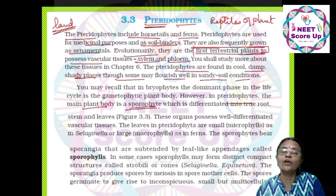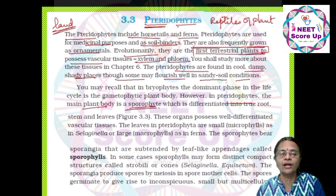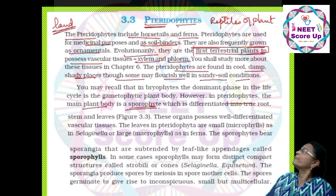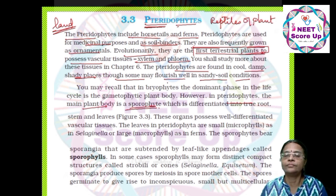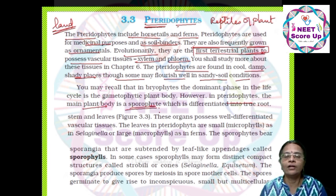In bryophytes, the sporophyte lacks photosynthetic pigment and is dependent on the gametophyte. But in pteridophytes, the sporophyte is independent — it will live as an autotroph because it has photosynthetic pigment.